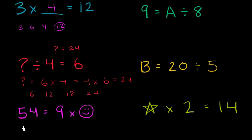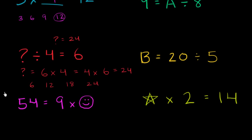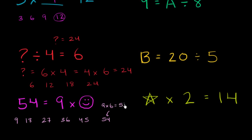Now here I have 54 is equal to 9 times smiley face. So 9 times what is equal to 54? Let's just skip count with 9 and try to figure that out. 9 times 1 is 9, 9 times 2 is 18, 9 times 3 is 27 — notice I'm just adding 9 each time — 9 times 4 is 36, 9 times 5 is 45, 9 times 6 is 54. So the smiley face must be equal to 6. If we replace the smiley face with a 6, then this equation is true: 54 is equal to 9 times 6.